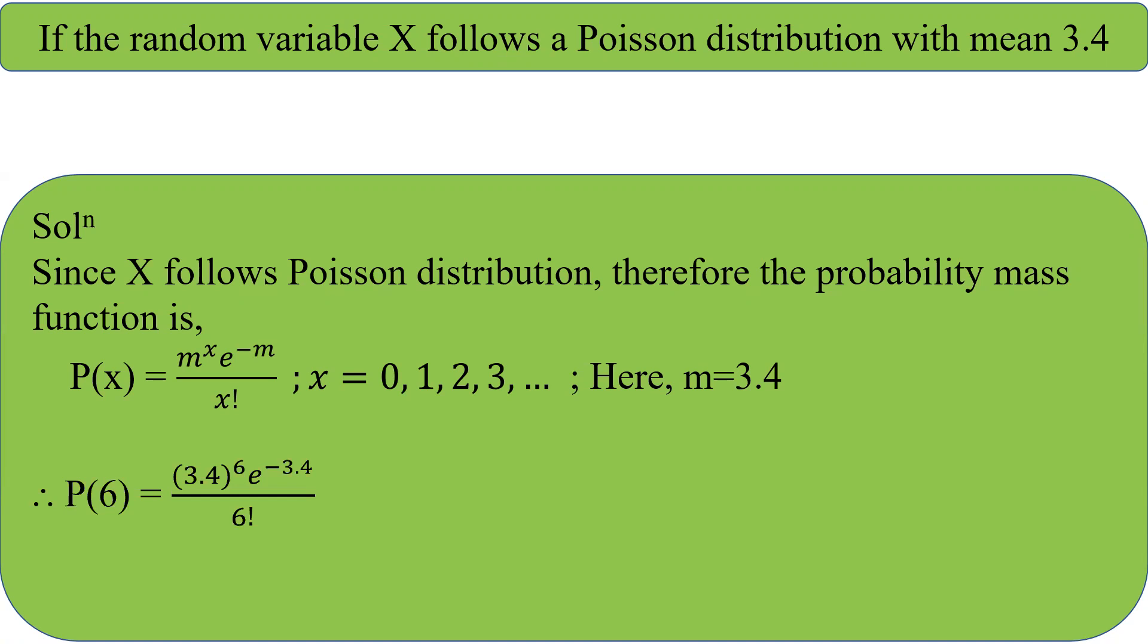Now we have to put the value of m is equal to 3.4, and we have to find the probability. Since we have to find the probability of X is equal to 6, therefore we should put X is equal to 6.